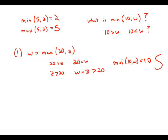Now let's put statement number 1 aside and focus purely on statement number 2. Statement number 2 tells us that w equals the max of 10 and w. So automatically, that means that w has to be bigger than 10.